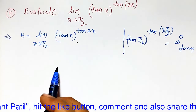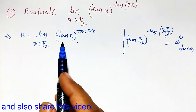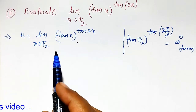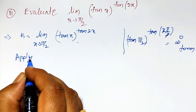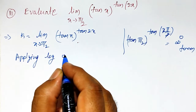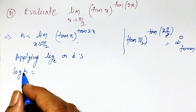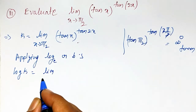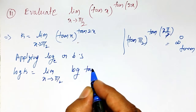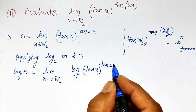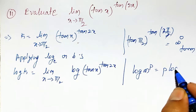Therefore, I cannot evaluate this directly. To evaluate it, I have to get it into the 0/0 form or infinity/infinity form. To do that, I have to apply log on both sides. Applying log on both sides, I will get log k equal to — it is to the base e always — log k equals the limit, and log will apply inside the limit. Using the property of log, that is log(m^p) = p·log(m).